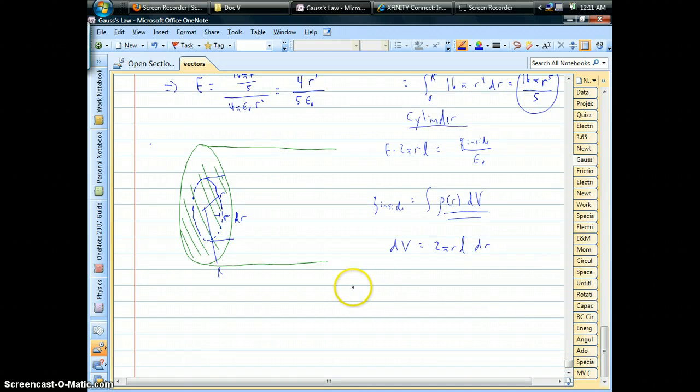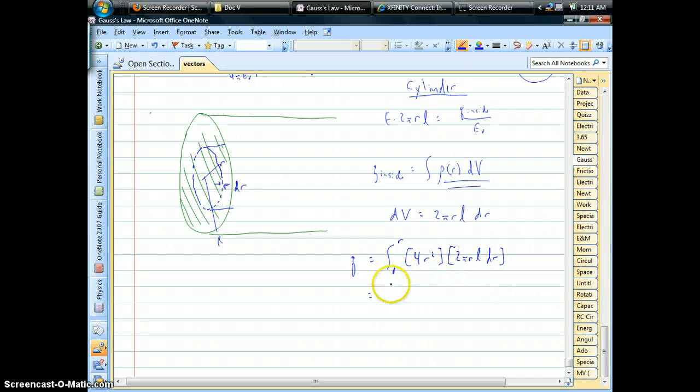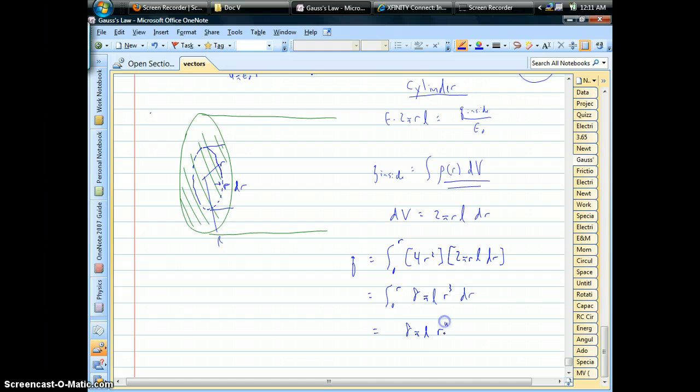And now to see what the integral looks like we'd be going from zero out to that Gaussian radius, we'd have our density function let's say it's the same thing 4r squared, we'd plug in this volume element which will be the same all the time for any cylindrical problem and then we could evaluate this. It's gonna be 8 pi length, we'll have an r cubed dr, and in the end this is going to look like we have constants, we'll get r to the fourth power divided by four and so the charge inside that cylindrical volume would be 2 pi times length times r to the fourth.